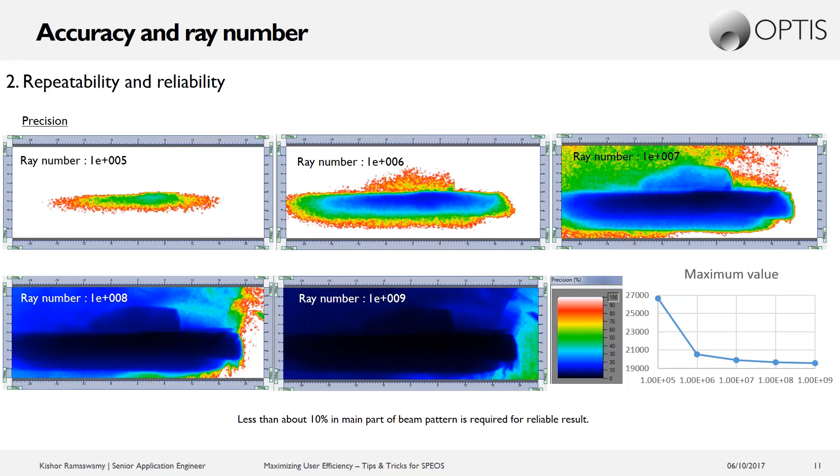So this is an important tool and I think it's one that not many people take advantage of. So definitely try to utilize this. It's available in both the intensity and the irradiance sensor.